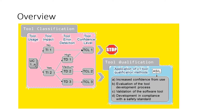If the tool is impacting your software under production, it is classified as TI2. The third step is TD — Tool Error Determination. TD1, TD2, and TD3 are the categories. TD1 means the tool error detection level is high, TD2 is medium, and TD3 is low. All TI1 combinations result in TCL level 1.